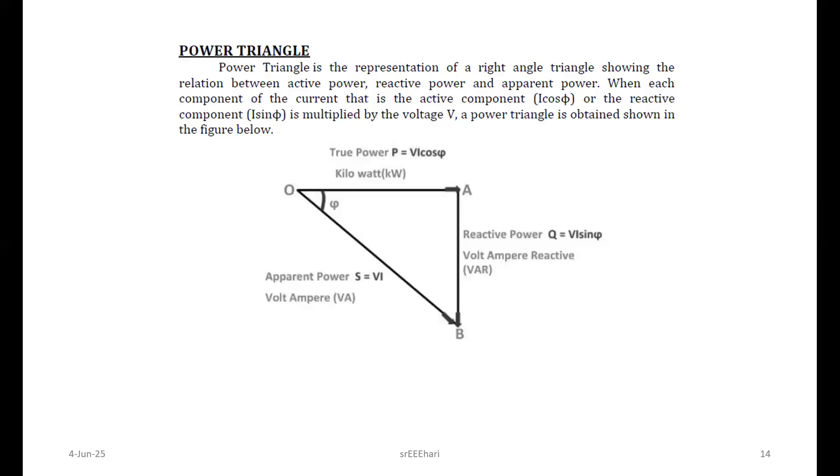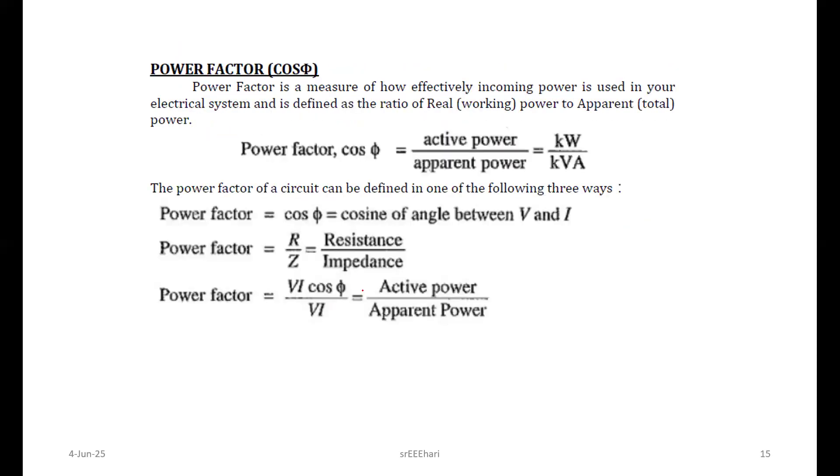This one is the power triangle. We have three powers here: active power P, reactive power Q, and this one is S. The units for this are volt amperes, volt ampere reactive, and kilowatts. From that we derive the power factor. It's obviously maybe called cos phi. It's an angle between voltage and current.